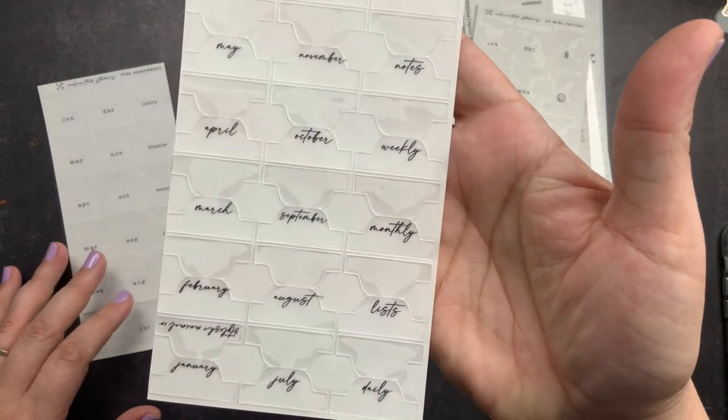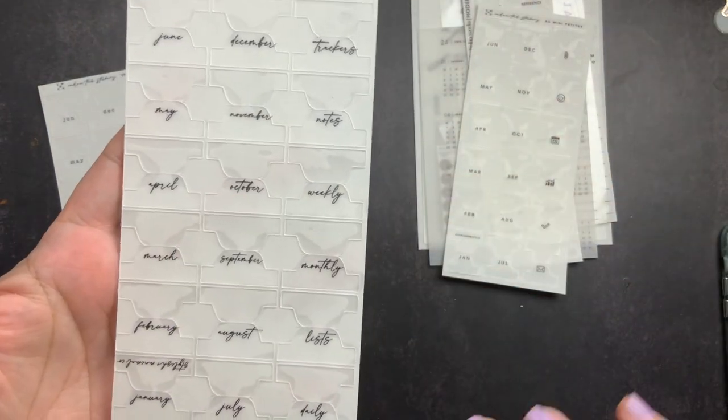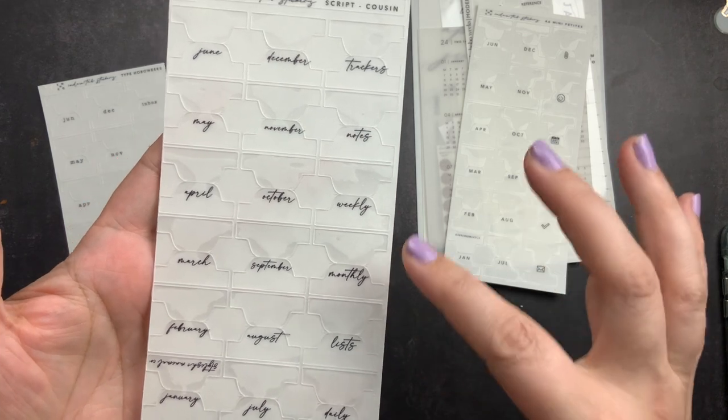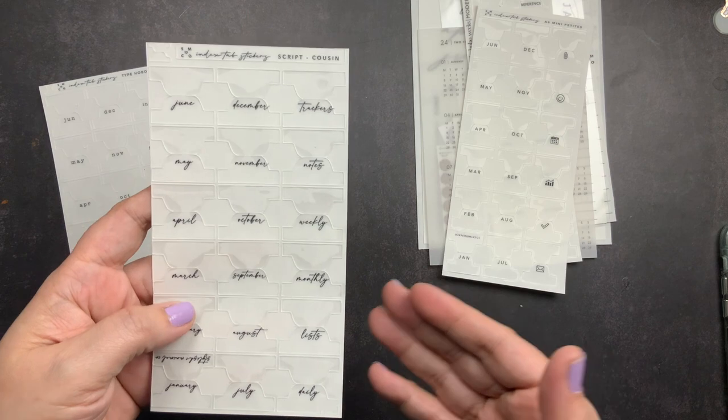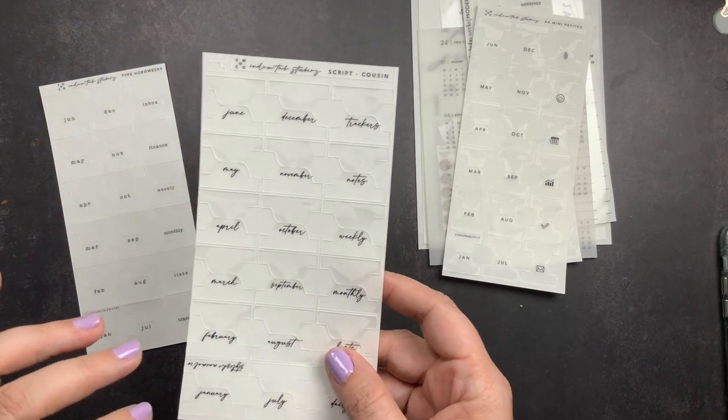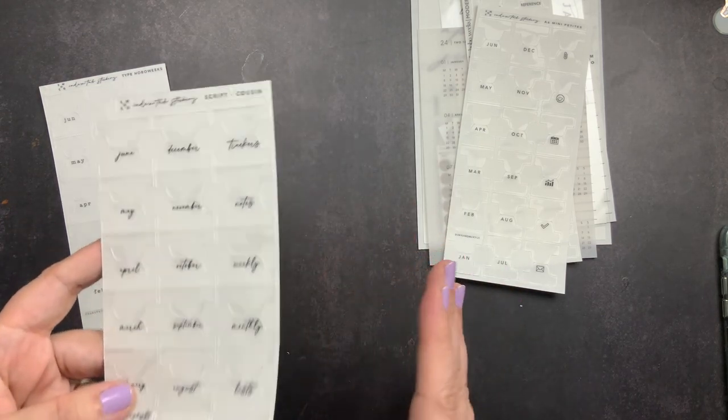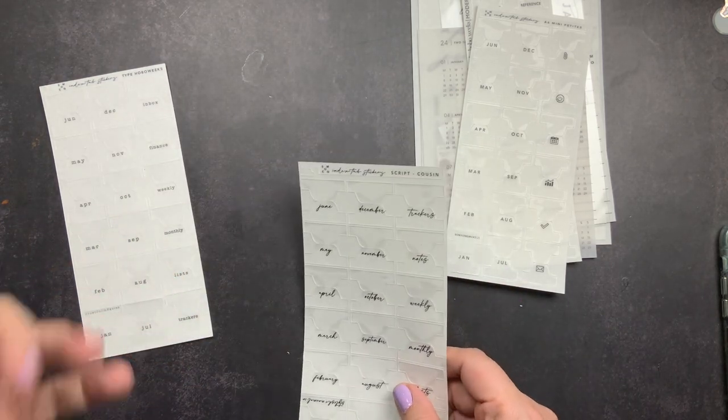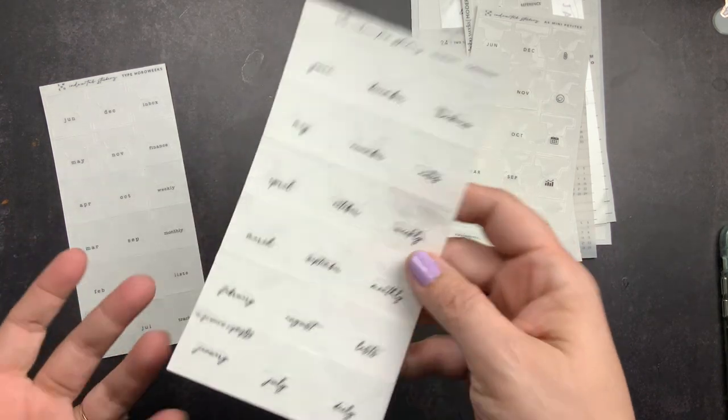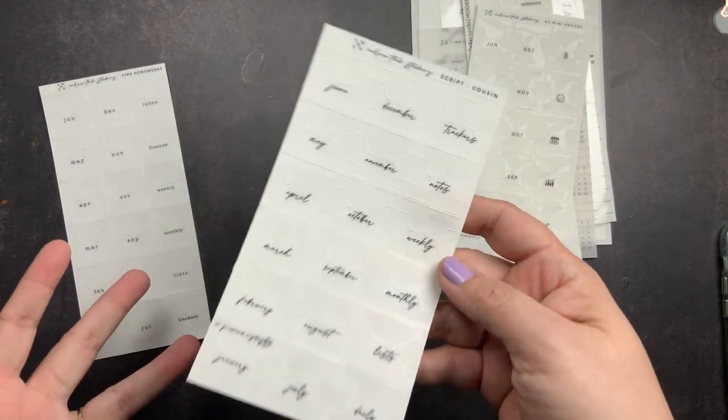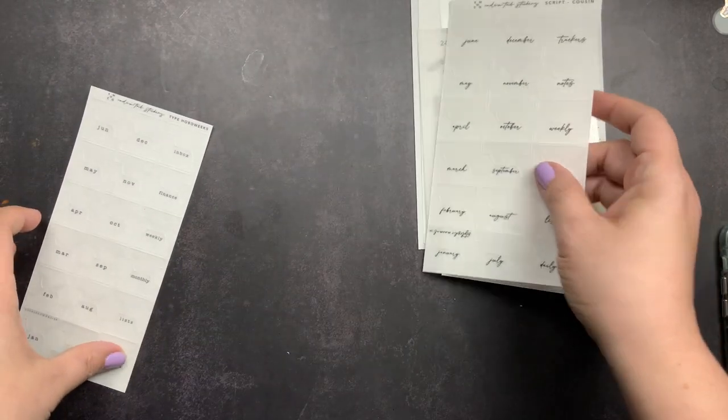Then this is the cousin size in her script. So once again, it has all of your months, but then it has daily lists, monthly, weekly notes and trackers. So that you can tab all of the sections in your Hobonichi cousin and all of the months in your Hobonichi cousin. I'm not using a cousin because I'm not using any Hobonichis. But this actually works really well in Wonderland 222. It works in the Sterling 8 common planner. It works in the journey planner. It works in the night owl. You can pretty much use this in pretty much every planner on the market. And most of these tabs would work for you.